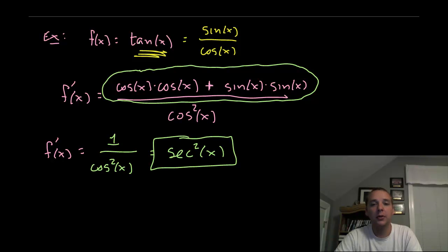So we just picked up a new trig derivative. The derivative for tangent is secant squared. That is one we can commit to memory.